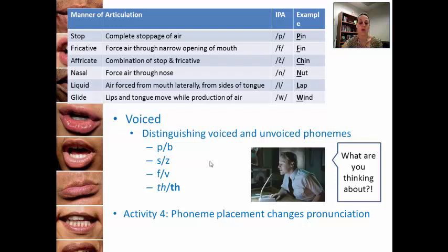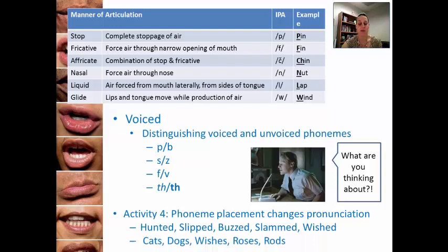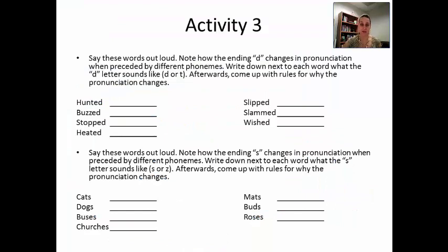So let's talk about the activity where I show you how phoneme placement can change the pronunciation of words. I'm going to have you look at two groups of words. This is activity three, so if you could locate the activity three document in the same folder where you are watching this video. There's also going to be a link shown on the video right now that you can click, and that will open the document for you. Take the next 15 minutes and say these words out loud to yourself.